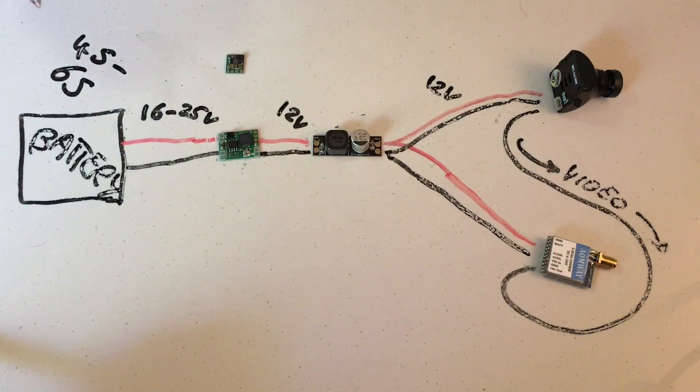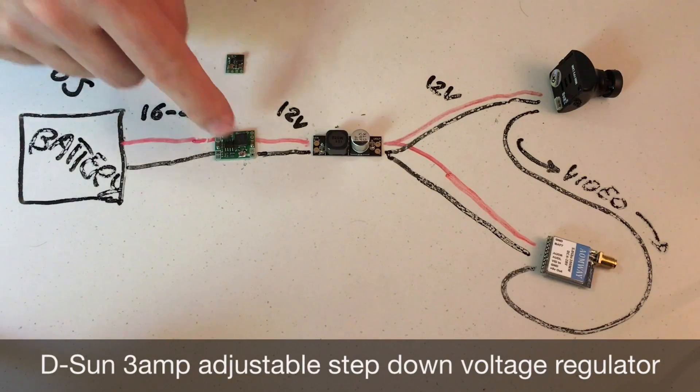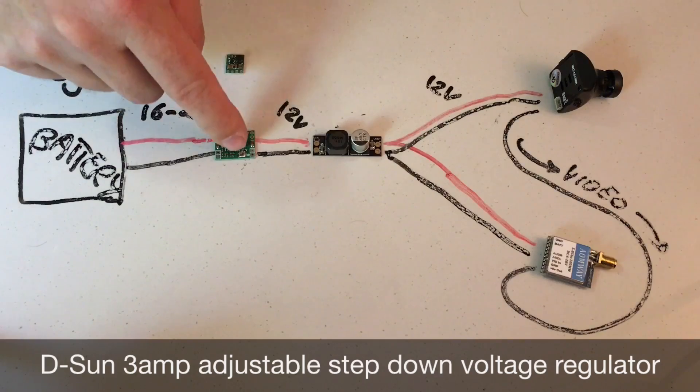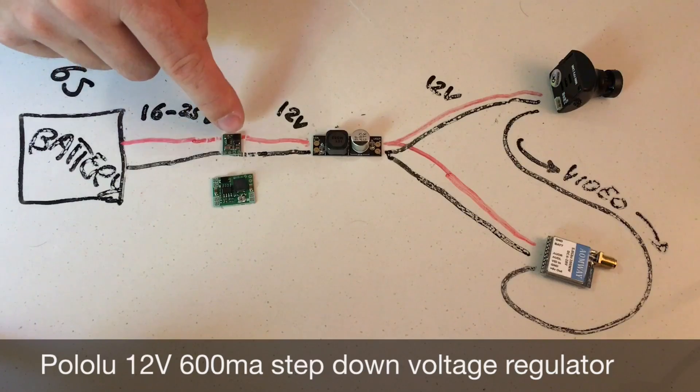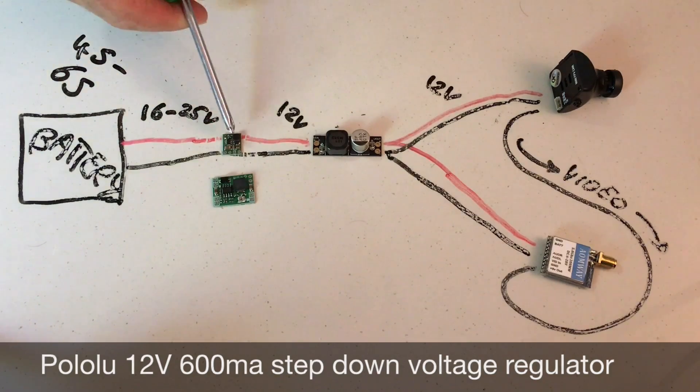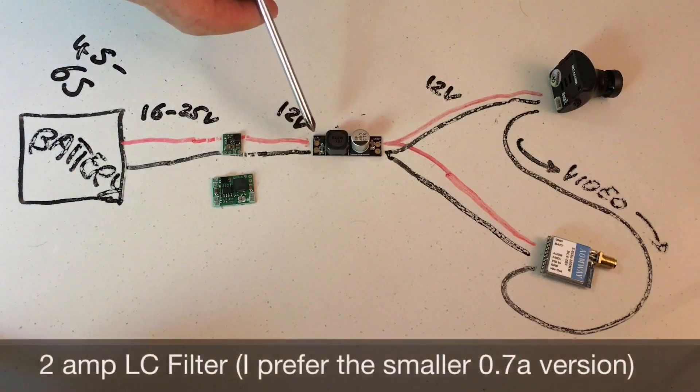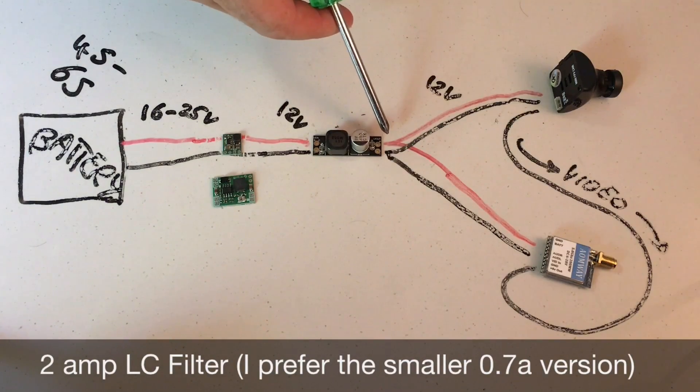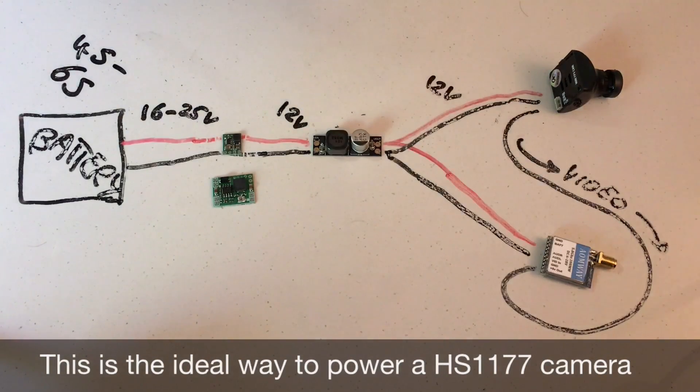For a setup with a 4S to 6S battery, one or the other or both, the output voltage is going to range from 16 to 25 volts. So we need to either use a DSUN regulator like this with adjustable step-down voltage, which we can adjust down to 12 volts, or one of these little mini Pololu 12 volt 600 milliamp step-down regulators, stepping that voltage down to 12 volts into the LC filter and then splitting the 12 volts out between the camera and the video transmitter.